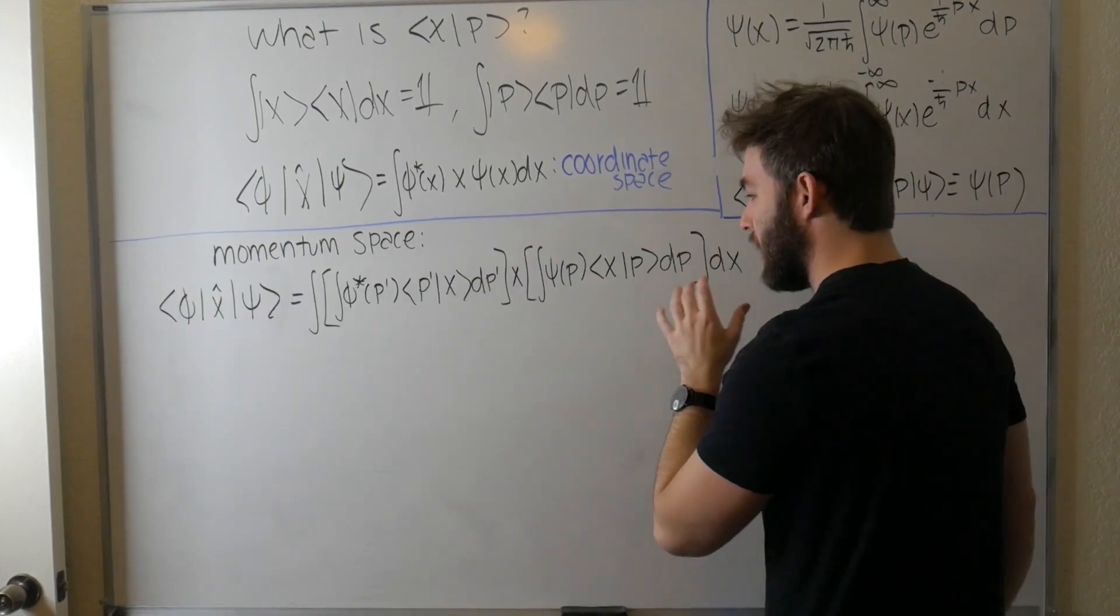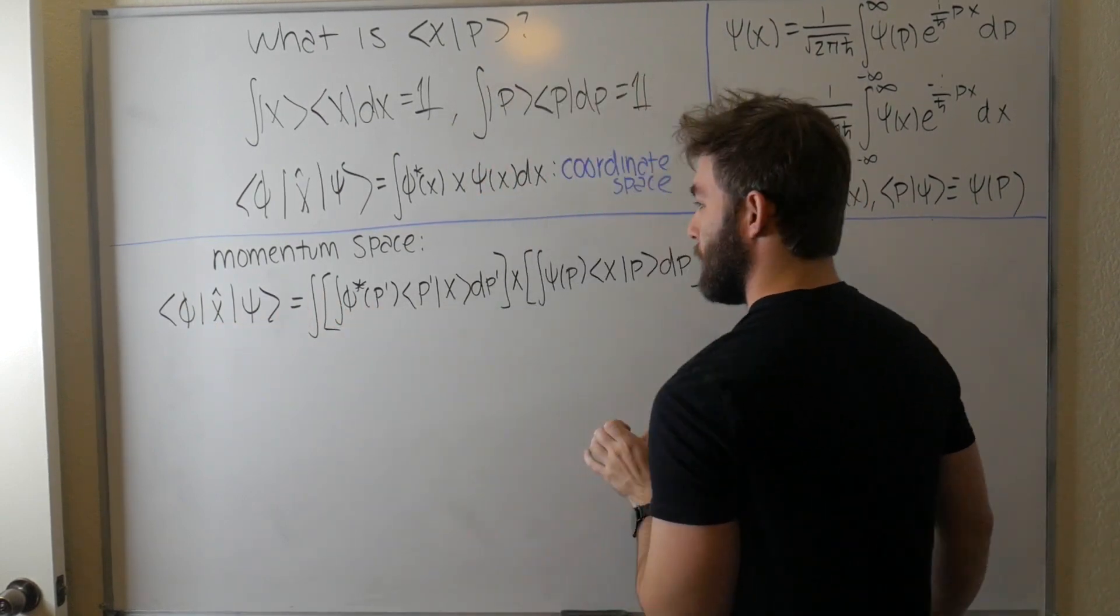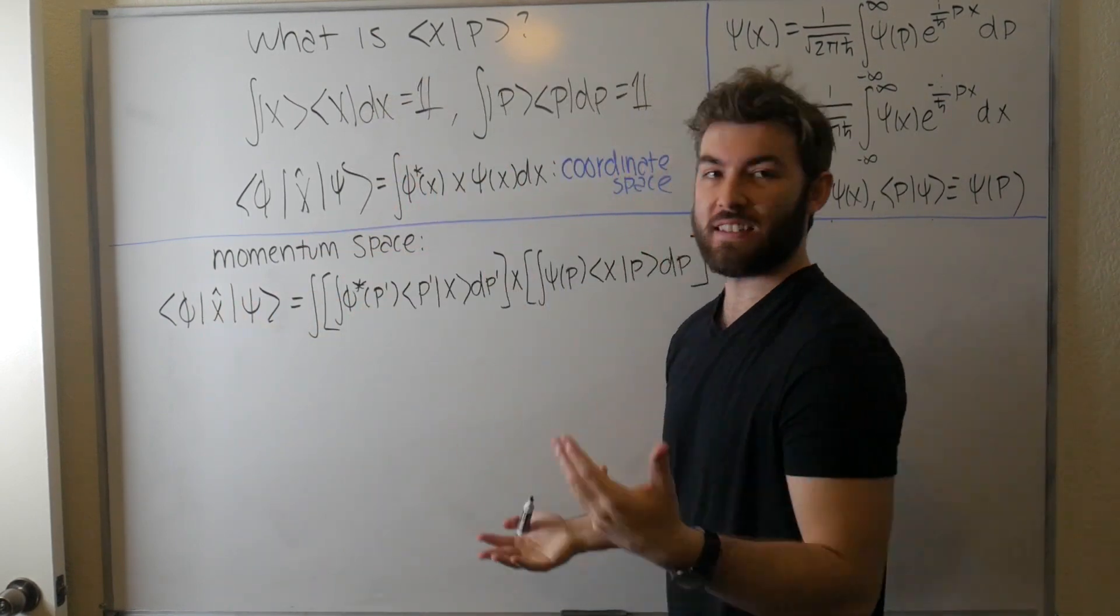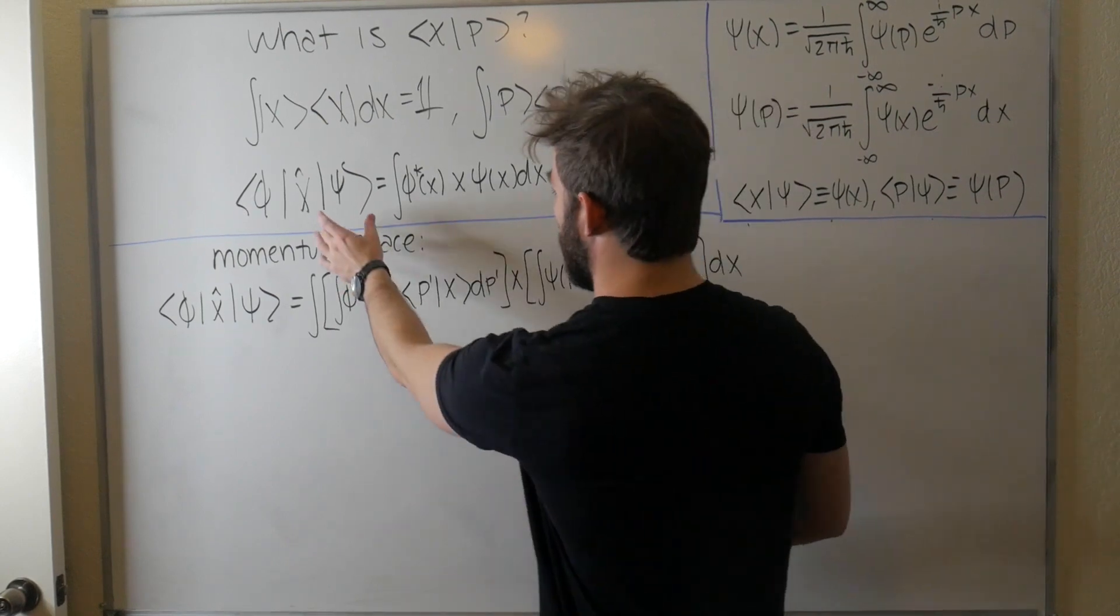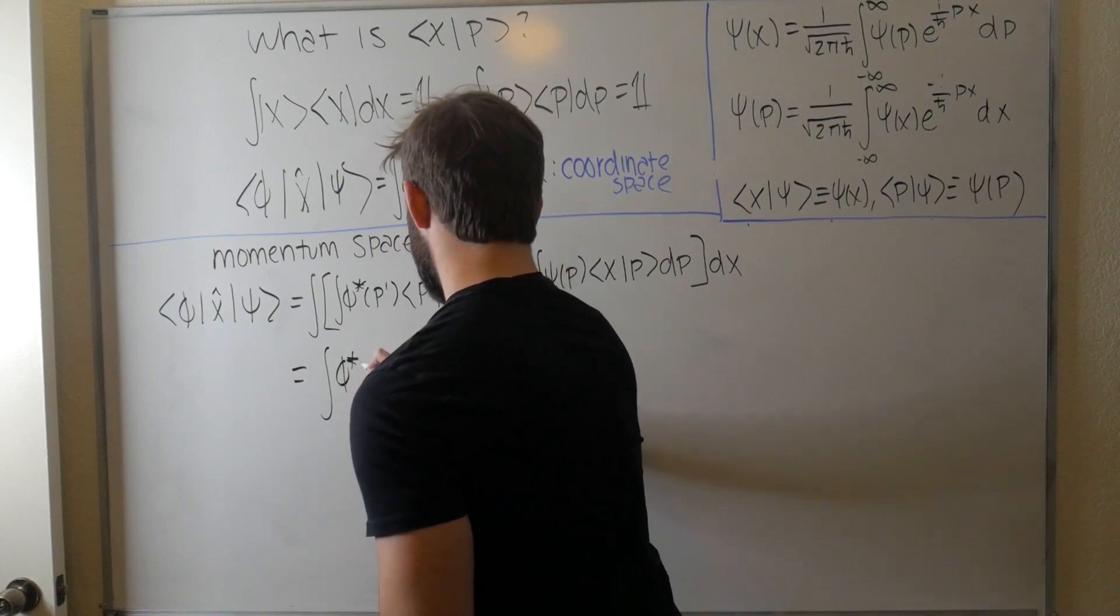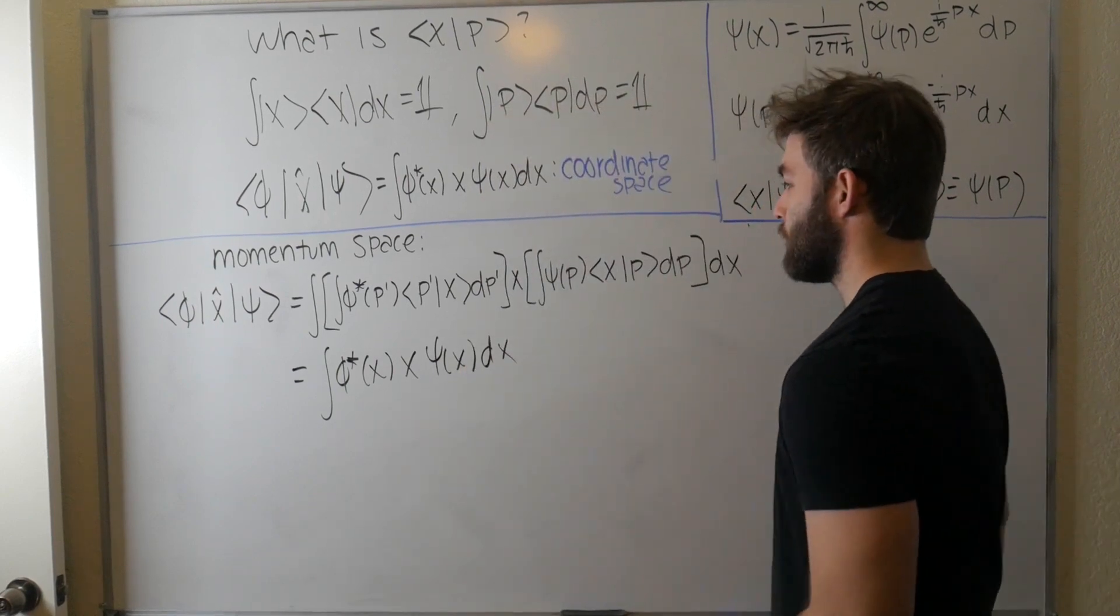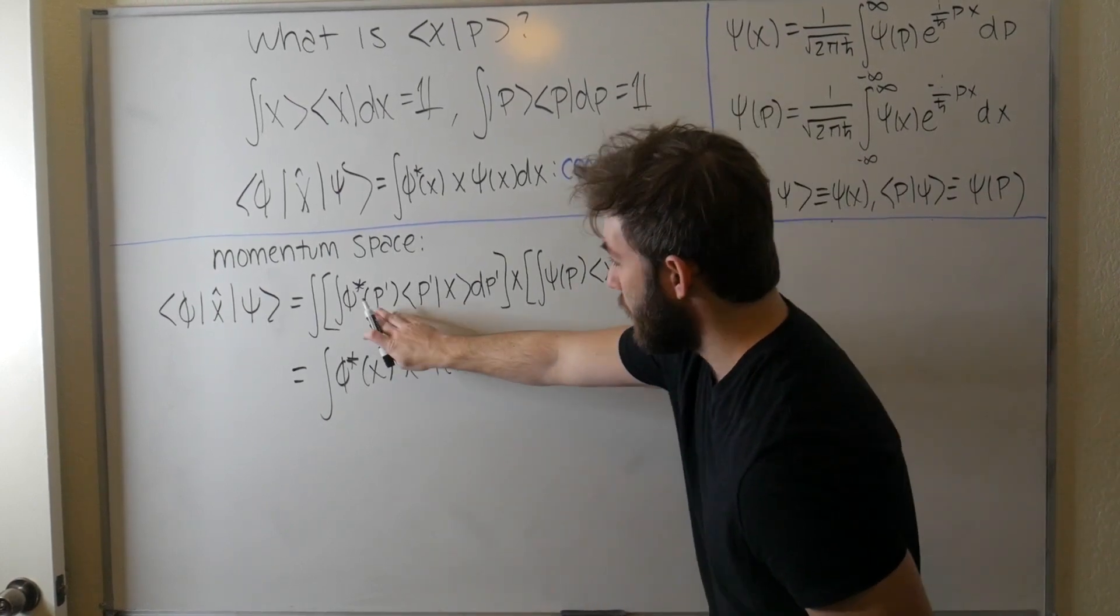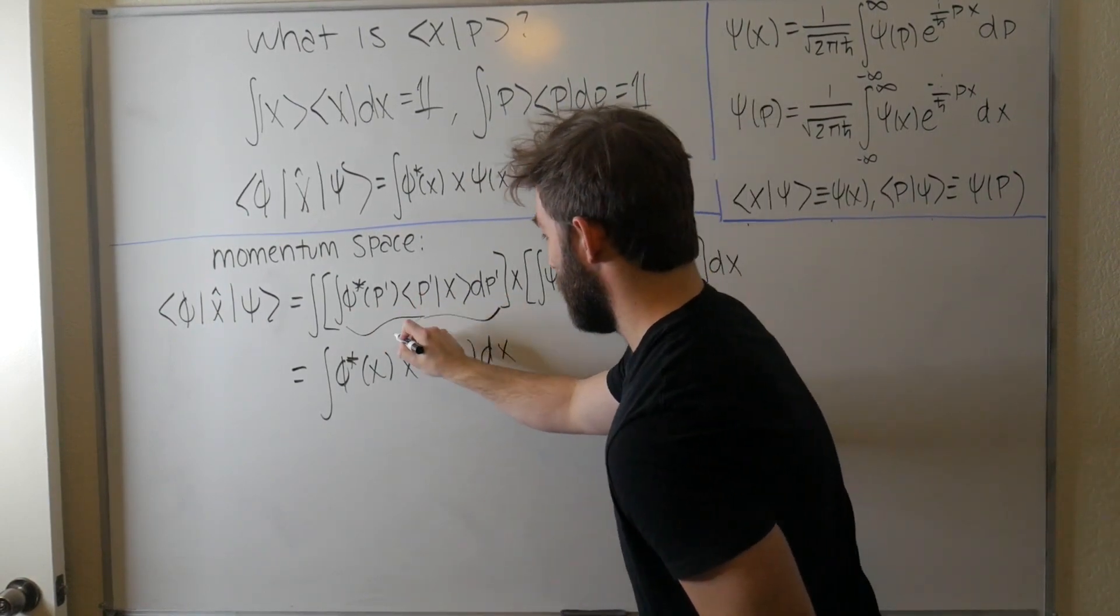I erased all the messy stuff so that this could become a bit more clear. So this is what we got in momentum space by taking this matrix element. But we also know that since this should be, you know, basis independent, whatever we get at the end should be whatever we get at the end. It shouldn't depend on what basis we represent it in. So in coordinate space, we got that this is equal to the integral of psi star of x, x psi of x dx. Momentum space, coordinate space, they should both give us the same answer, which tells us that this term here that's in terms of psi and p prime, this we can identify with this psi of x term. Similarly, this term that's in terms of psi and p, we can identify with the psi of x term.